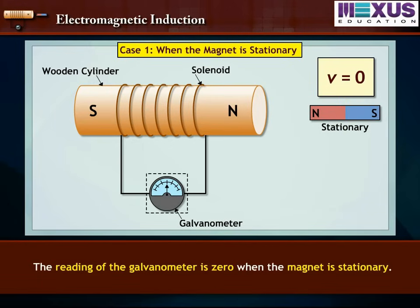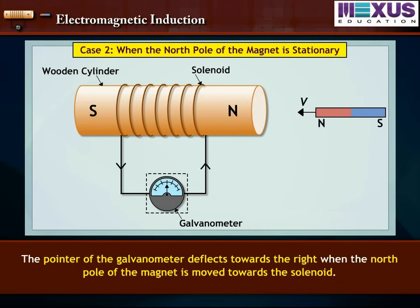The reading of the galvanometer is 0 when the magnet is stationary. The pointer of the galvanometer deflects towards the right when the north pole of the magnet is moved towards the solenoid.